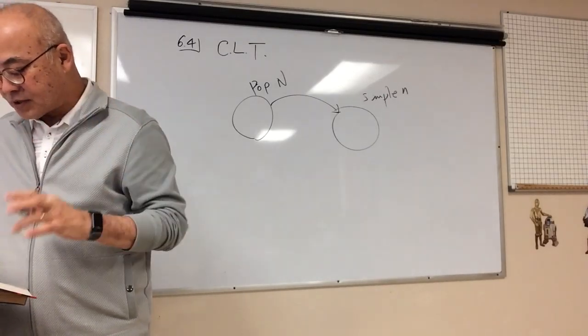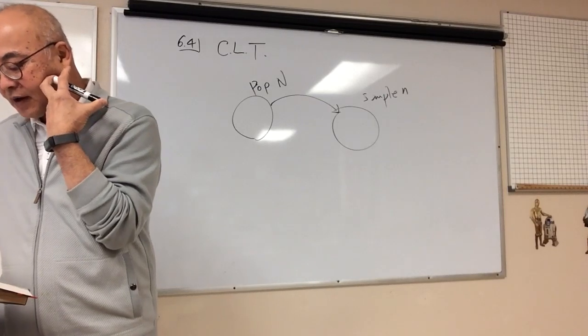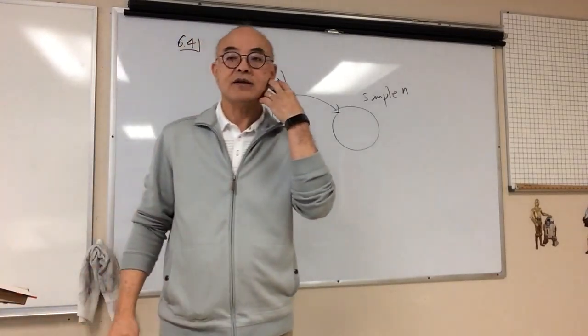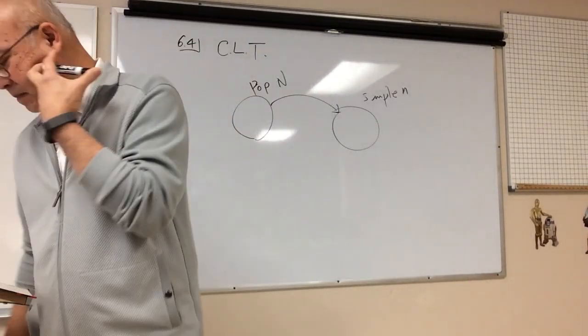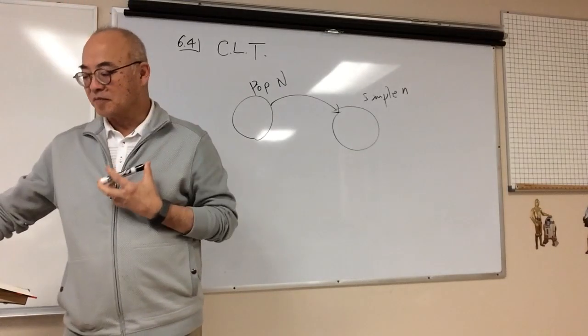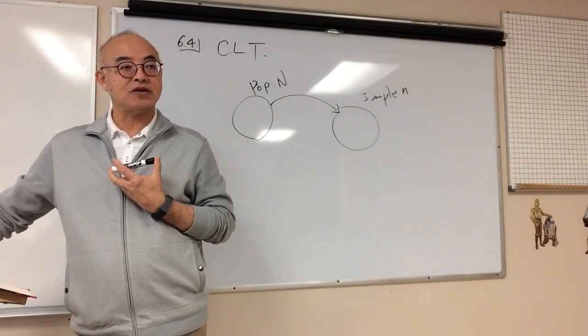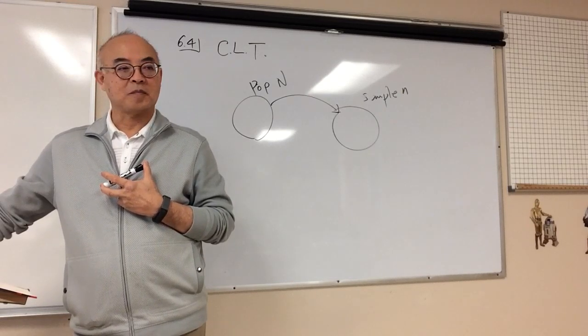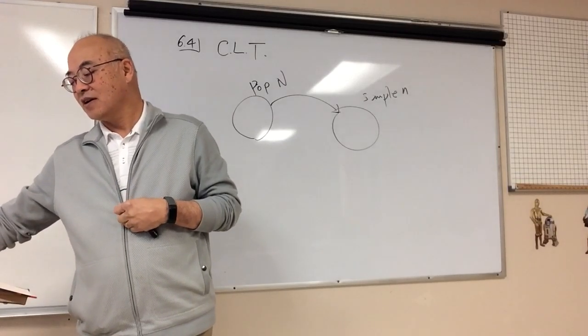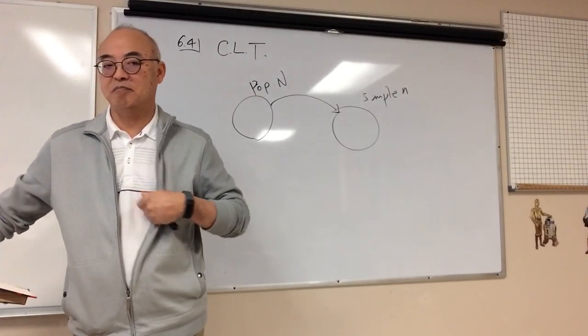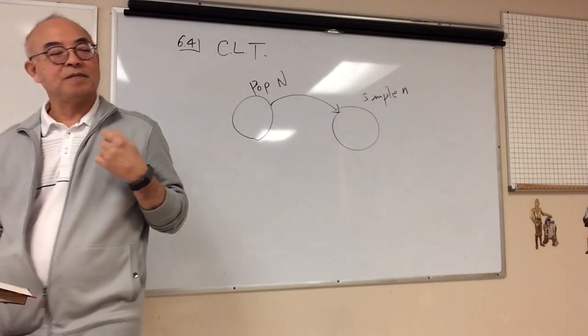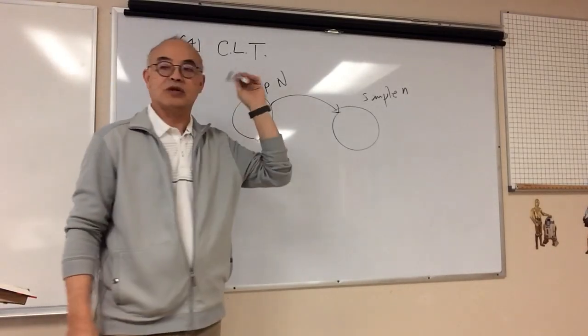So let's do example number one. Look at the original data. If you look at the original data on the earthquake depths, that is definitely right skewed, correct? You can see it's definitely right skewed. However, if I take samples, unexpectedly, the sampling distribution looks like what? Normal-ish. It looks normal, doesn't it? If nothing else, it's roughly symmetric, right? No outliers, so you could probably say it's normal.